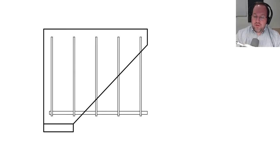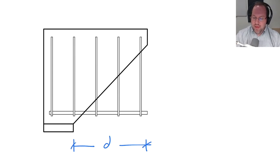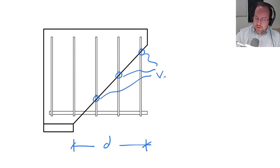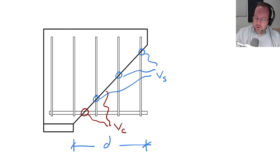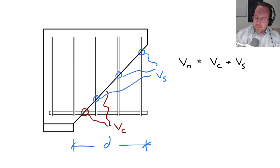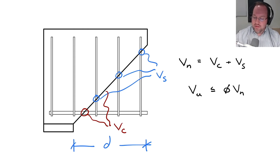Here on the whiteboard is a representation of our end region being cracked in shear. The distance I'm considering is distance d away from the face of the support. My diagonal crack is intersecting with the stirrups, and those stirrups provide the capacity known as V_s — the shear capacity contributed by my steel, specifically transverse steel. We also have concrete capacity V_c from the cracking concrete and the bottom steel. The total nominal shear capacity V_n equals V_c plus V_s. My factored shear demand is V_u, and my design shear capacity is phi*V_n, where phi equals 0.75 for shear failures.